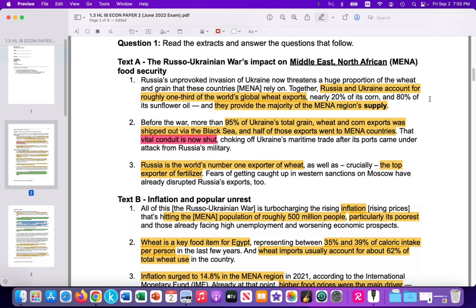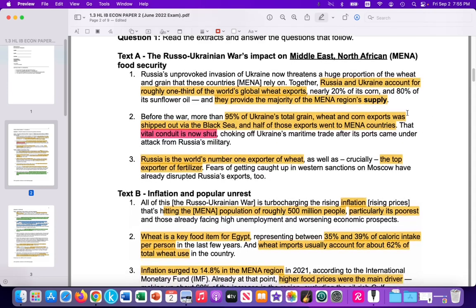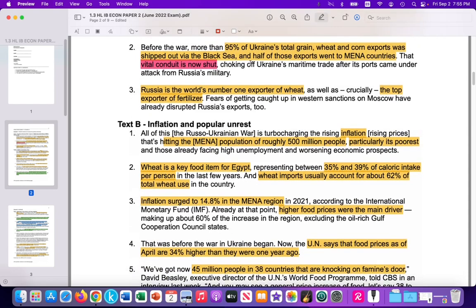And you should be in the habit on a Paper 2 to highlight, once you're able to, after your reading time, to highlight key snippets of information that could be used to support your reasoning. So here, Russia-Ukraine accounts for one-third of the world's global wheat exports, provide the majority of the wheat for the MENA region. So they're the biggest supplier to that region. 95% of Ukraine's total grain, wheat, and corn exports were shipped out via the Black Sea.